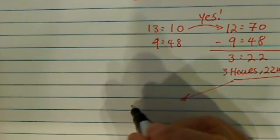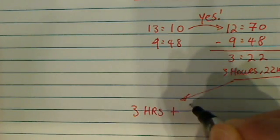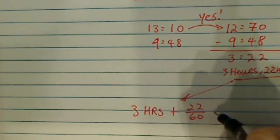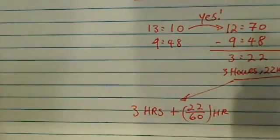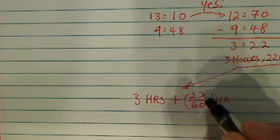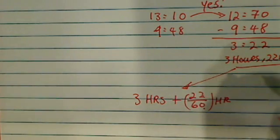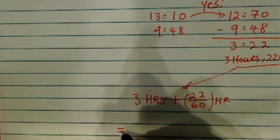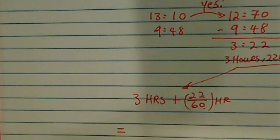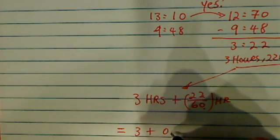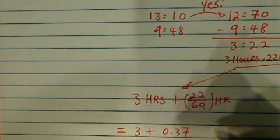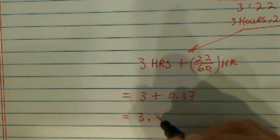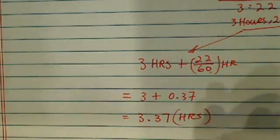In order to convert this one into decimals, what we can do is 3 hours plus 22 over 60. This one is into the hours as well. This is how we convert back and forth. This is the minutes, this is the hours. So when we divide by 60, we convert it into decimals. So 22 divided by 60, I have 0.36, so it's 3 plus 0.37 or so. So the total hours you worked in decimal form is 3.37 hours.